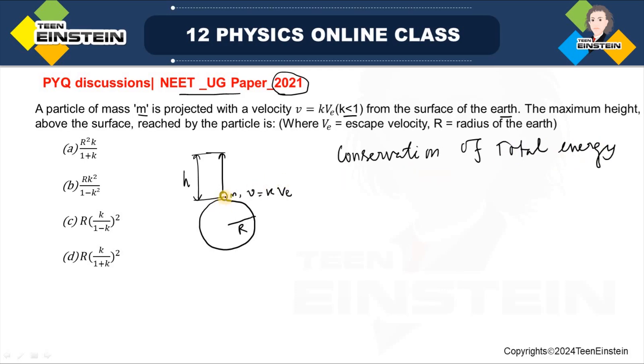When the particle was just projected from the surface of the Earth, it has total energy - the kinetic energy given to it: half m K square VE square, plus the potential energy that is minus GMm by R. And at this maximum height, it will have zero velocity, so the final energy will be minus GMm by R plus h.